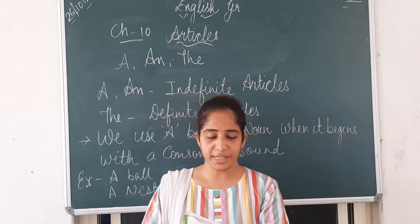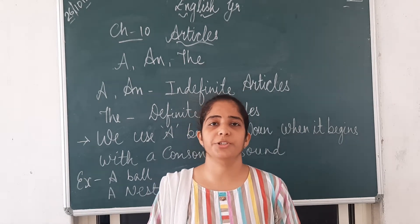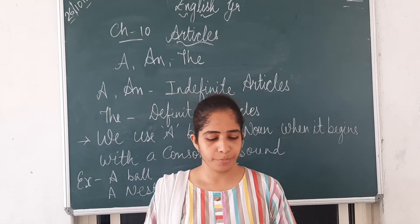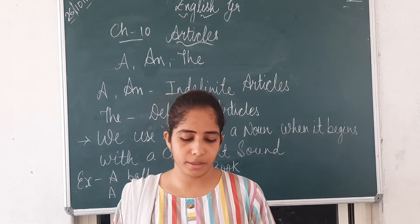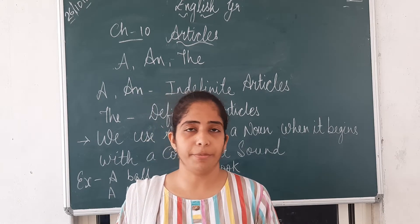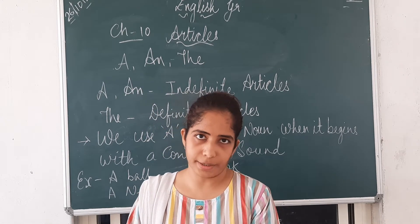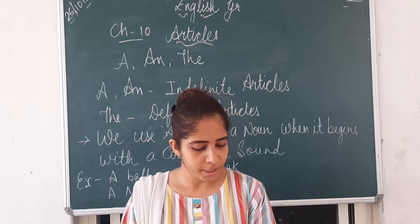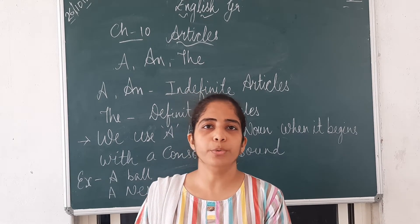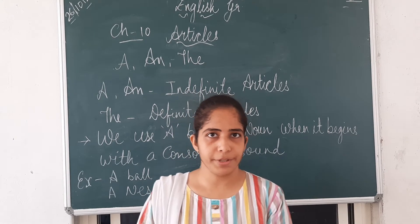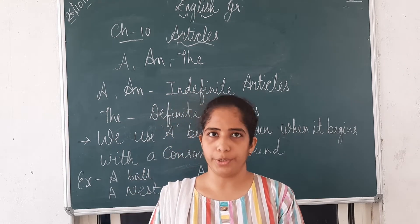Let us revise first — page number 51 from your English grammar textbook. There are 26 letters in the alphabet. In alphabets there are 26 letters. There are 5 vowels: A, E, I, O, U. Five vowels, and the remaining are the consonants.